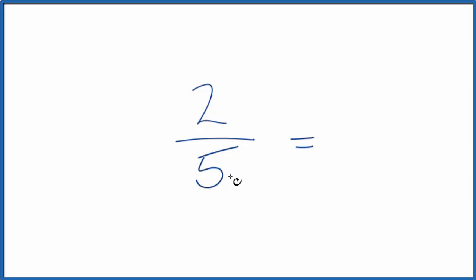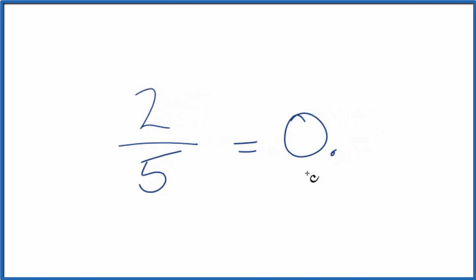We know that 2 is smaller than 5, so our answer is going to have to be less than 1. It'll be zero point something.